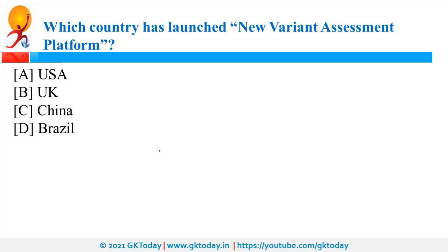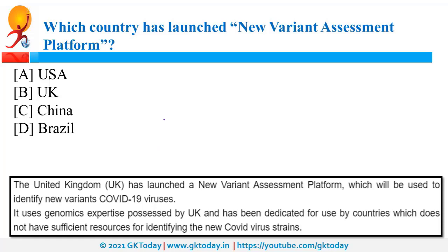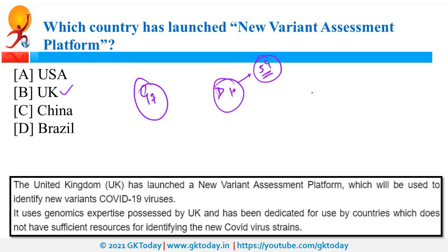UK has launched a new variant assessment platform to monitor and track new variants of coronavirus. Recently a new strain of the virus was found in UK. UK was also in news as it is the host of the G7 summit this year, and has invited India, Australia, and South Korea. UK was also in news because of D10 — a group of 10 democracies suggested by UK as an alternative to reduce dependency on China for 5G equipment. A similar initiative is SCRI — Supply Chain Resilience Initiative — by India, Japan, and Australia.